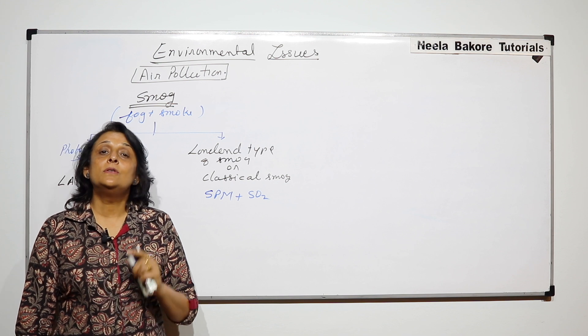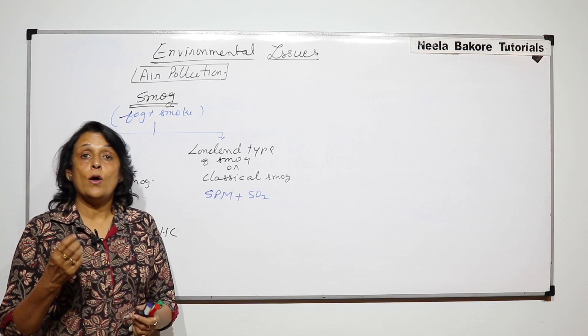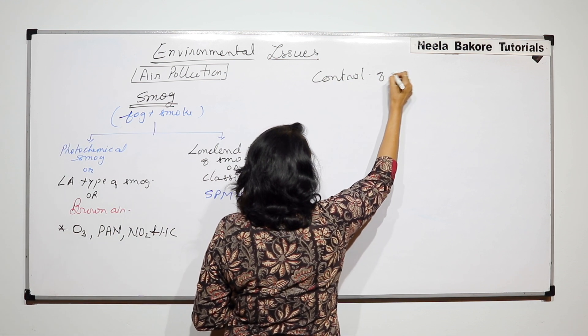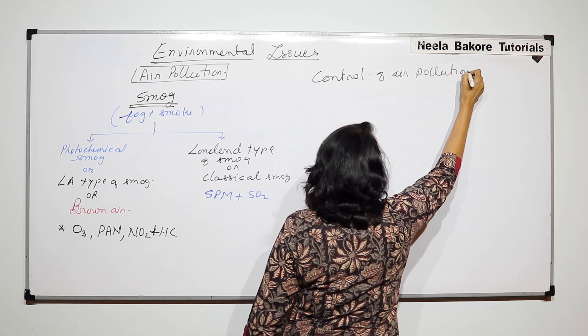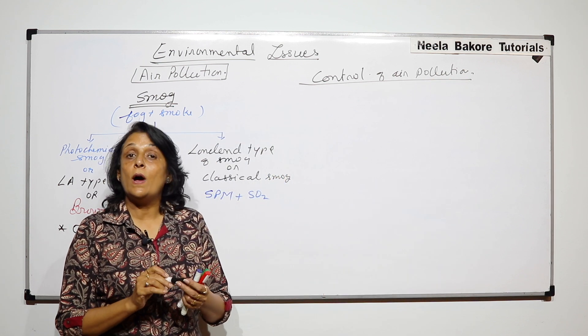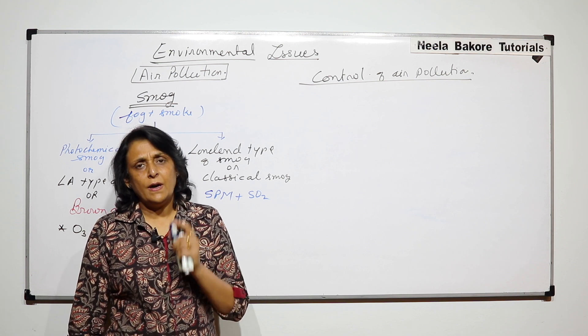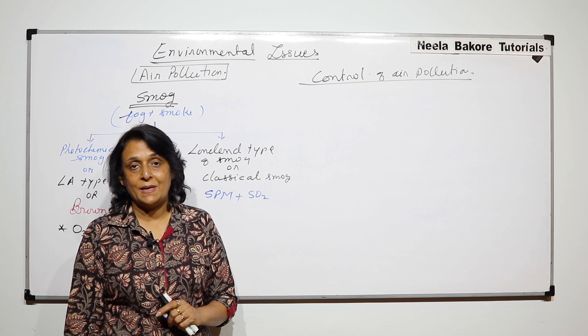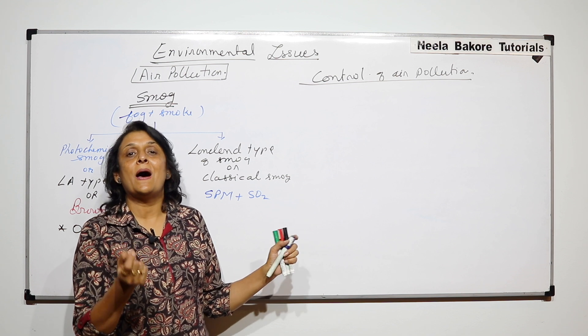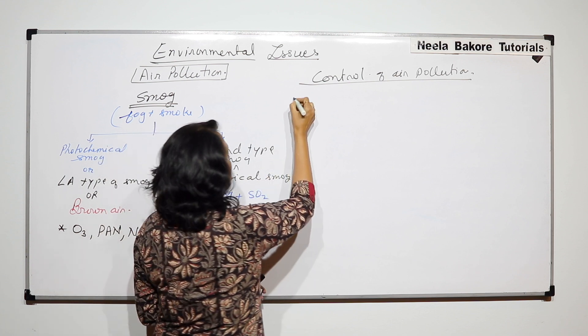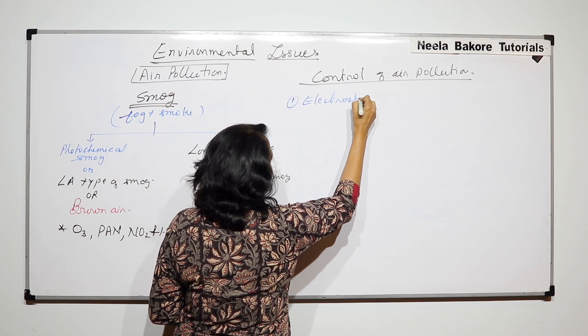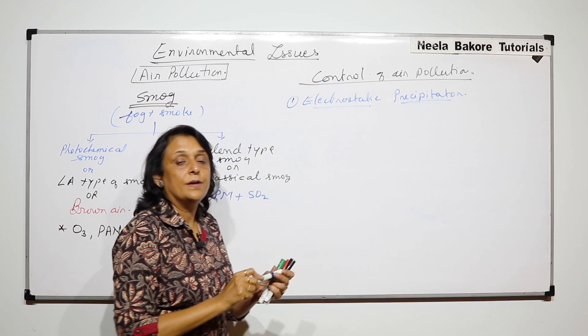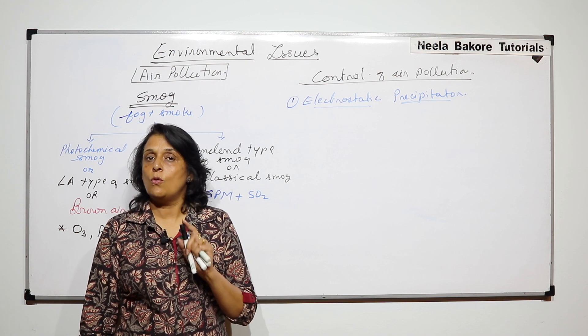Now if we talk about controlling the air pollution, then there are various ways or methods depending upon what exactly is the main air pollutant. And when we were talking about the causes, we said there is one important factor and one major pollutant which is suspended particulate matter. And if its size is very small, then it causes maximum damage. So here we will first talk about how to get rid of this particulate matter. And the device which is used is called electrostatic precipitator.